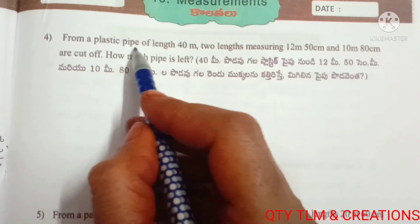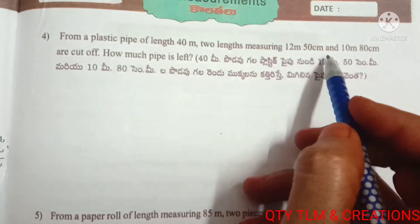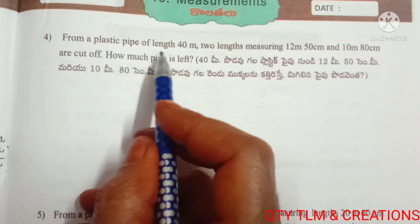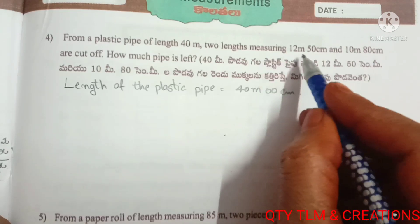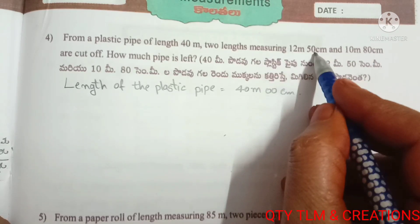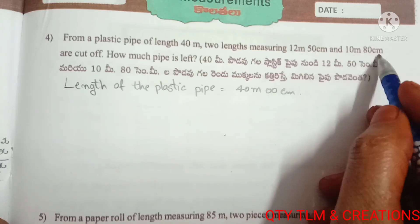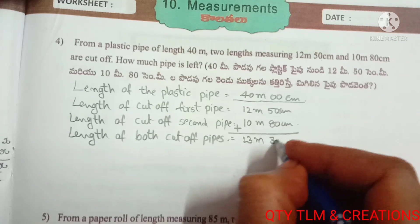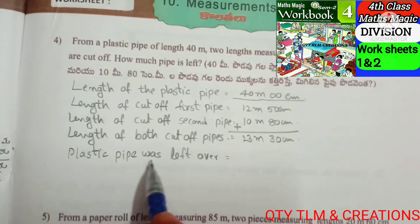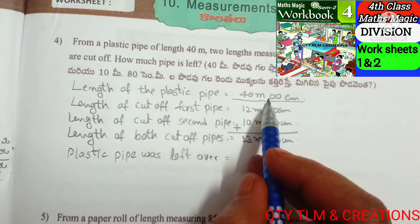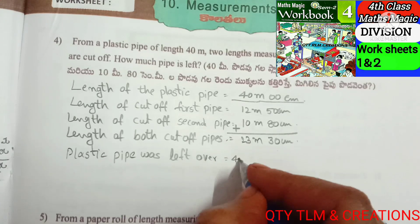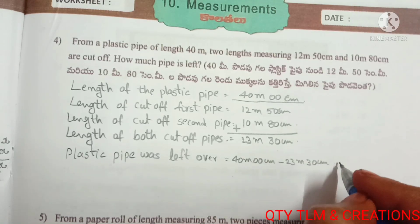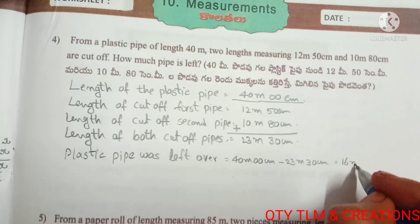Next question: From a plastic pipe of length 40 meters, lengths measuring 12 meters 50 centimeters and 10 meters 80 centimeters are cut off. How much pipe is left? Length of both cutoff pipes equals 23 meters 30 centimeters. Length of pipe left equals 16 meters 70 centimeters.